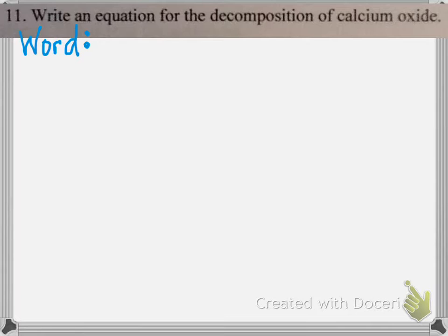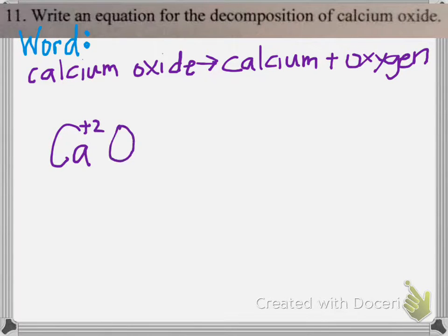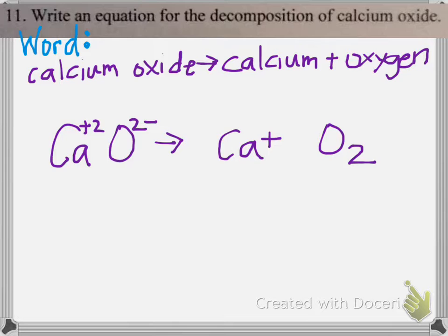Question number eleven: write an equation for the decomposition of calcium oxide. The reactant is calcium oxide, and it will always decompose into its elements: calcium and oxygen. Word equation: calcium oxide produces calcium plus oxygen. Skeleton equation: CaO (ionic) gives Ca plus O2 (diatomic). Balancing: a coefficient of two in front of CaO for the oxygen, and a coefficient of two in front of Ca — properly balanced.